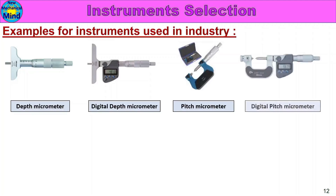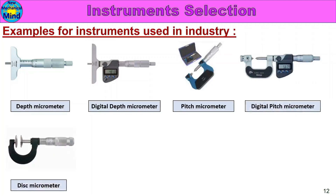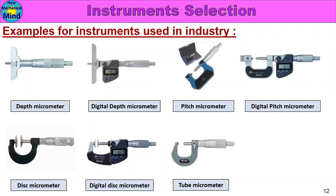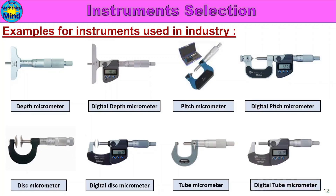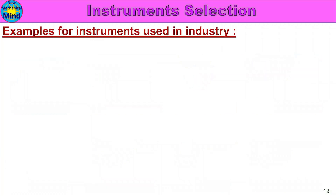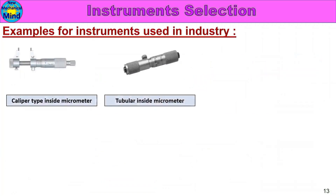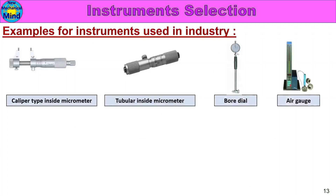Pitch Micrometer, Digital Pitch Micrometer, Disk Micrometer, Digital Disk Micrometer, Cube Micrometer, Digital Tube Micrometer, Caliper Type Inside Micrometer, Tubular Inside Micrometer, Bore Dial, Air Gauge.